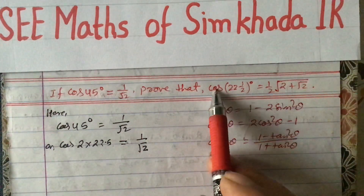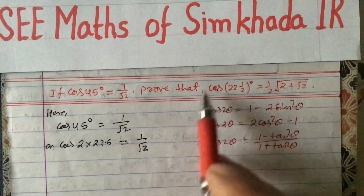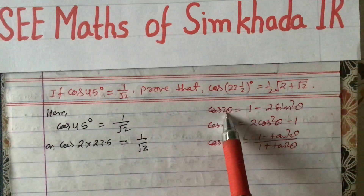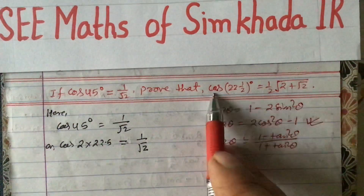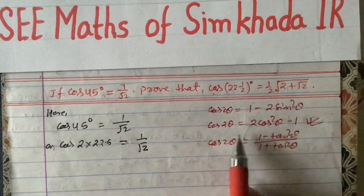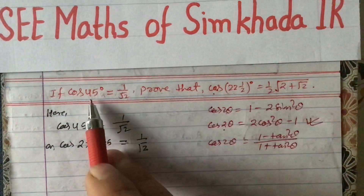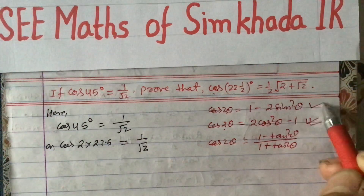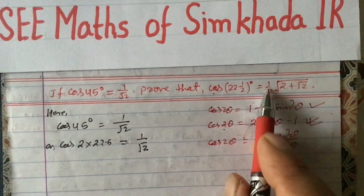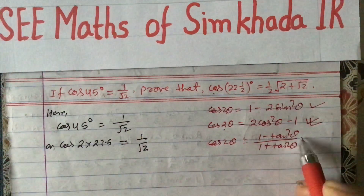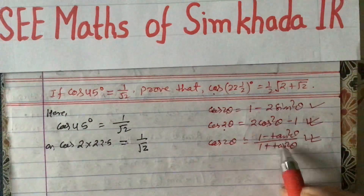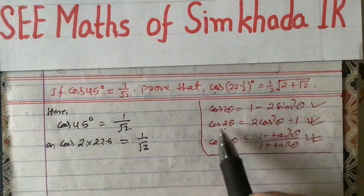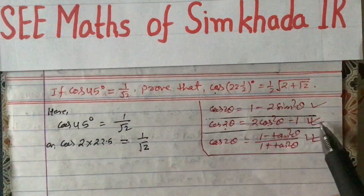Here either you will get cos, sine, or tan — only these three cases will be given. If you have to find the value in terms of cos, then use the cos 2θ formula in terms of cos, which is the second formula. If sine is required, use the first formula. If tan is required, use the third formula. Since here we need cos 22.5°, we choose the middle formula: cos 2θ = 2cos²θ − 1.